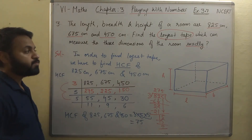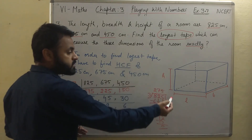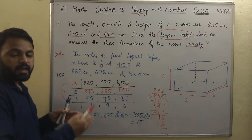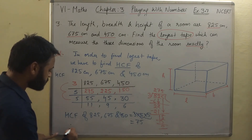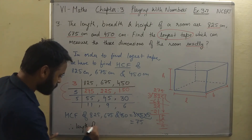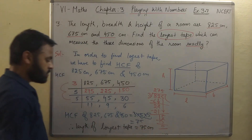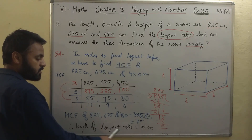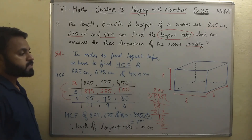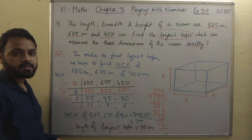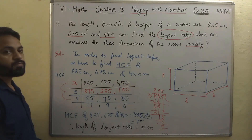The HCF of 825, 675, and 450 equals 3×5×5 = 75. That means we can use a tape of 75 centimeters which can measure all three dimensions — length, breadth, and height of the room — in an exact number of times. Therefore, the length of the longest tape required is 75 centimeters. I hope you find this question easy. Always look for the words 'longest,' 'greatest,' or 'highest' to know when to find HCF, and LCM for minimum values. Let's now see question number 4.